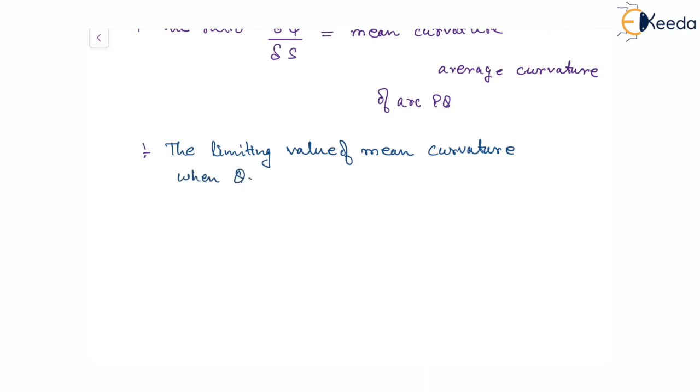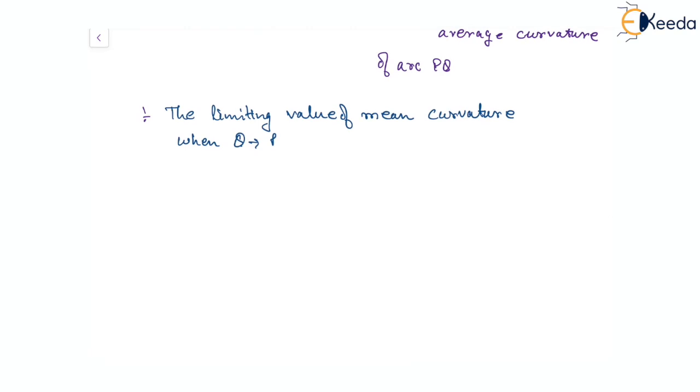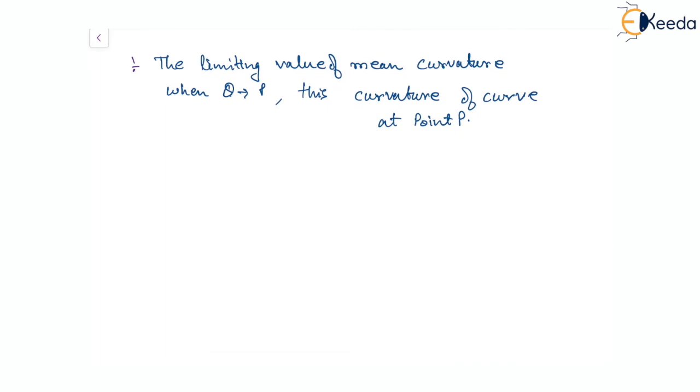point Q tends to P. Therefore, this is what we call curvature of the curve at point P. The curvature at point P is the limit as del s tends to zero of del psi by del s, which equals d psi by ds.